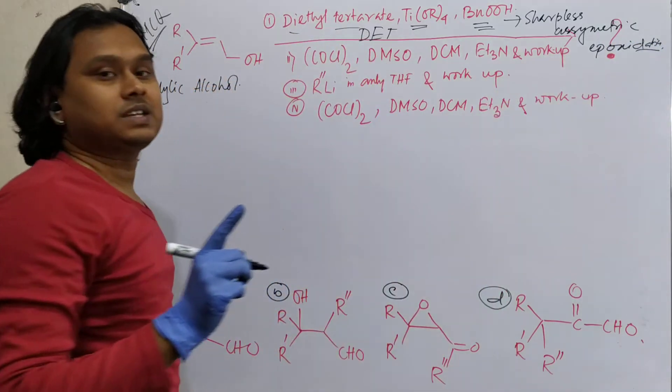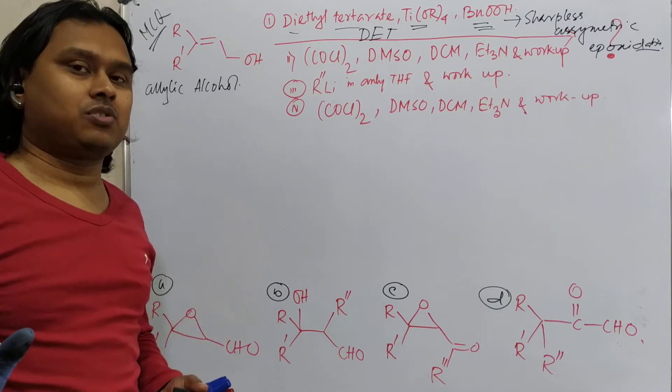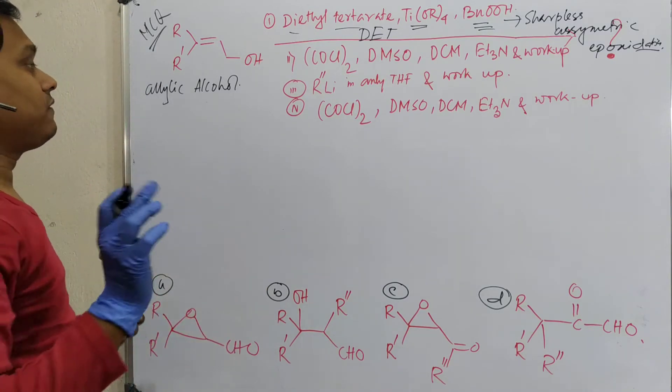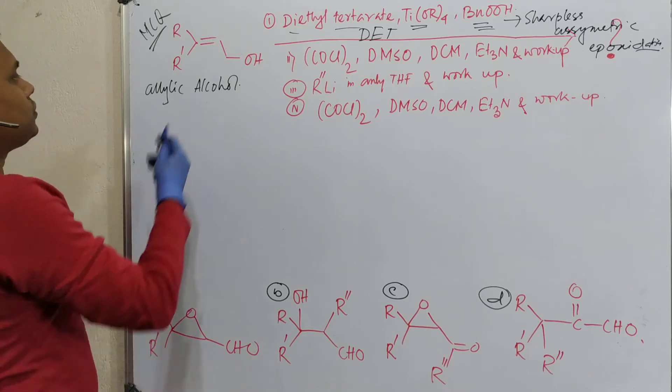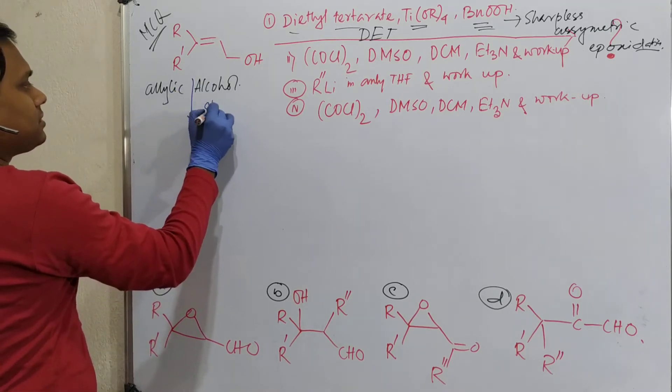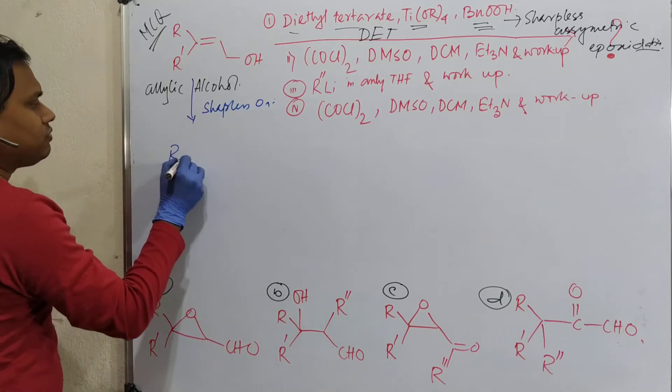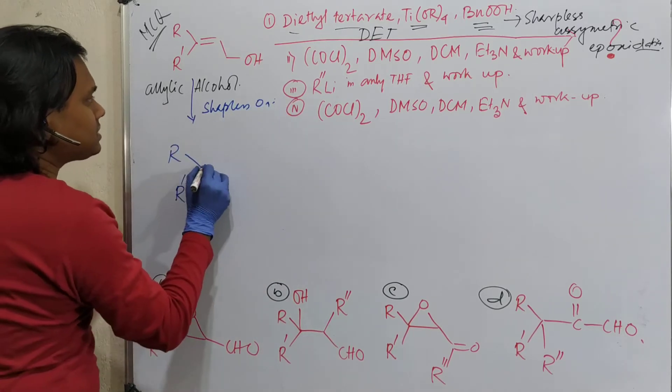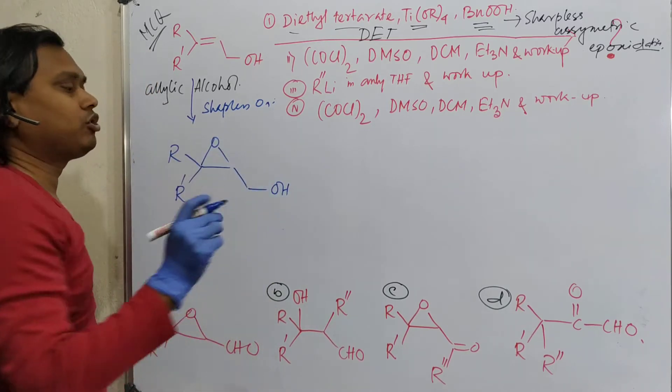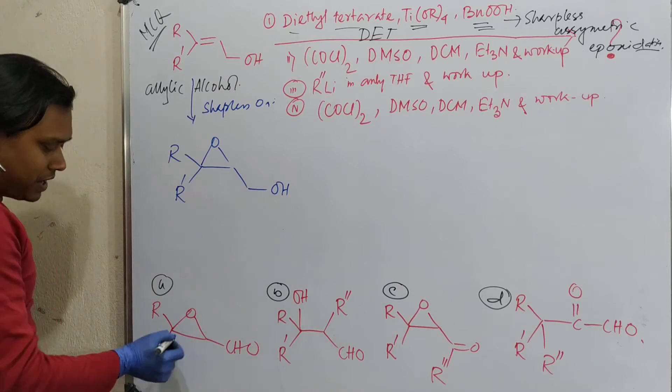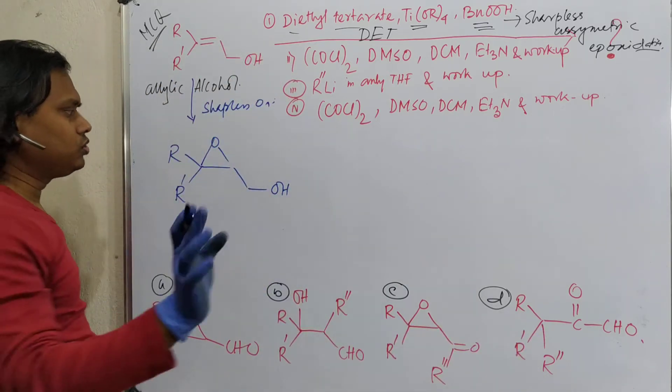And titanium isopropoxide and tertiary butyl hydroperoxide. What is this condition? This is Sharpless asymmetric epoxidation. I have already discussed a dedicated lecture on Sharpless asymmetric epoxidation as well as dihydroxylation. So please visit if you have any doubt. So what will it result? First step, Sharpless oxidation or epoxidation. Since no stereochemistry is mentioned, I shall not bother with stereochemistry. And by the way, no options are given about stereochemistry. So don't need to be worried about. This problem is easier.